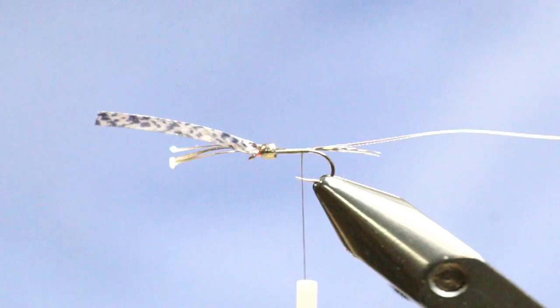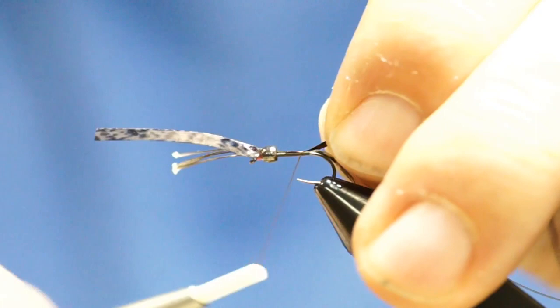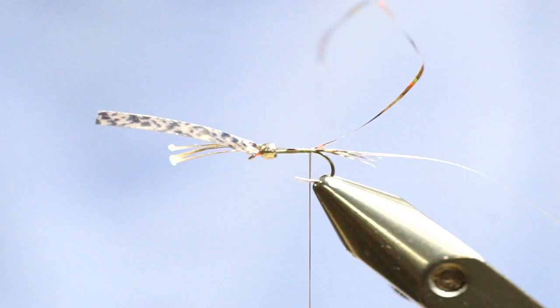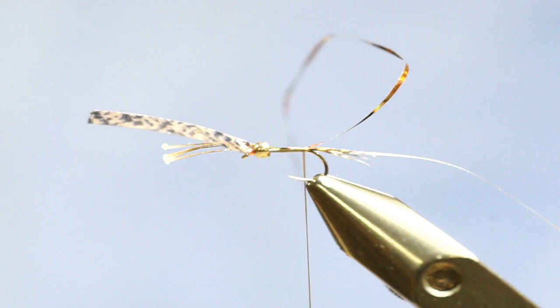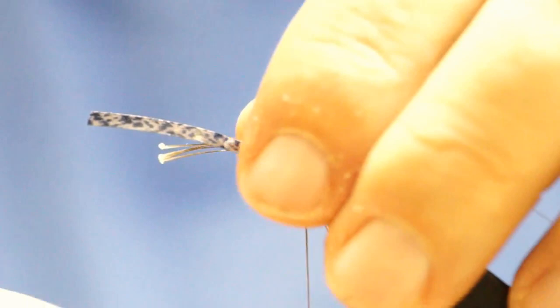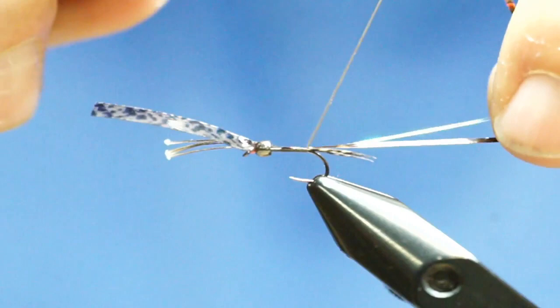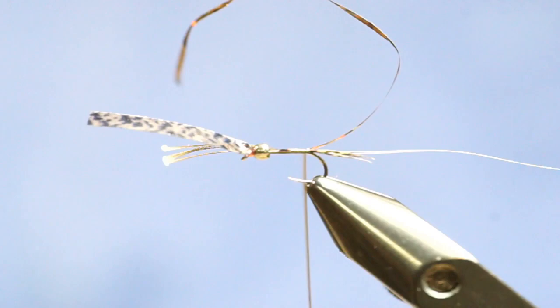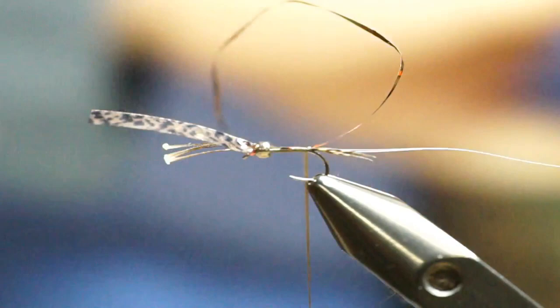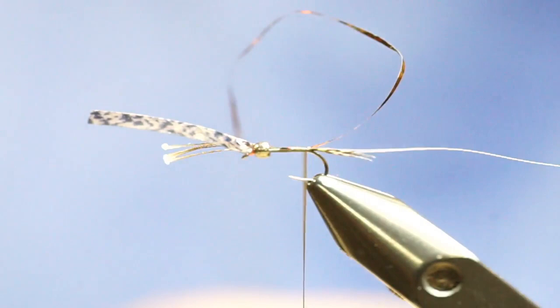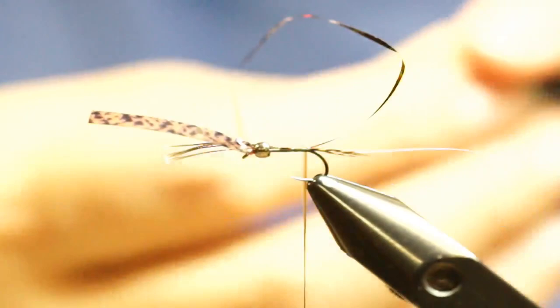We're going to tie in the Flashabou first, and then our tinsel will come in second. That's your typical first on, last up. So, if you're an accountant, you've heard of FIFO, which means first in, last out. Last in, first out, whatever. So that's a similar principle. Now, we're just going to wrap this up and do some housekeeping, clip off the excess there.